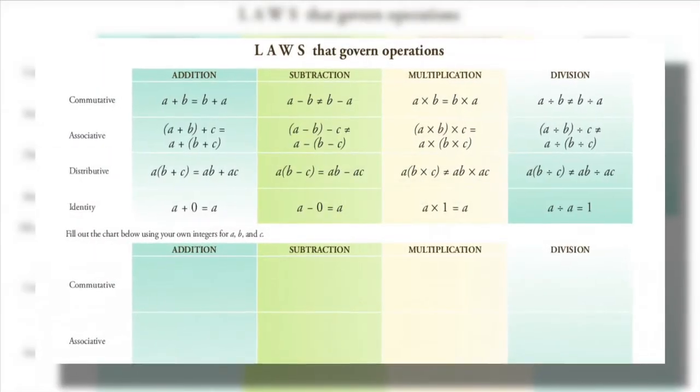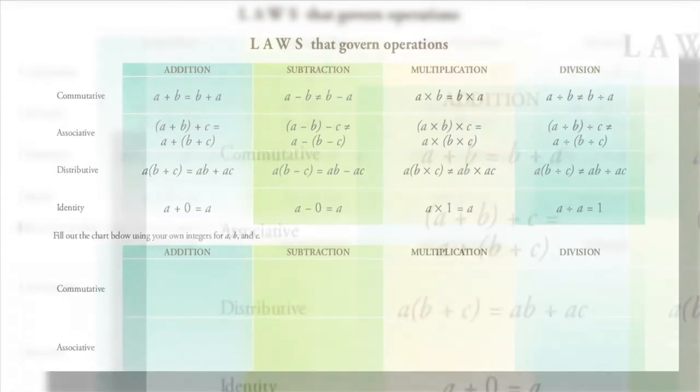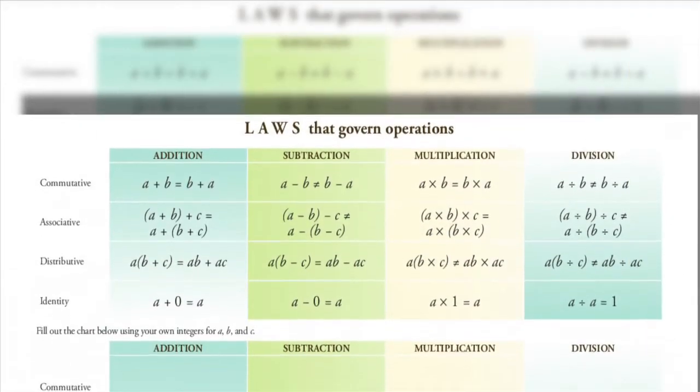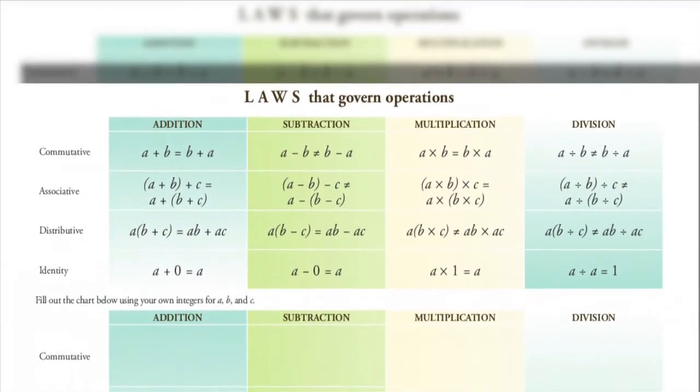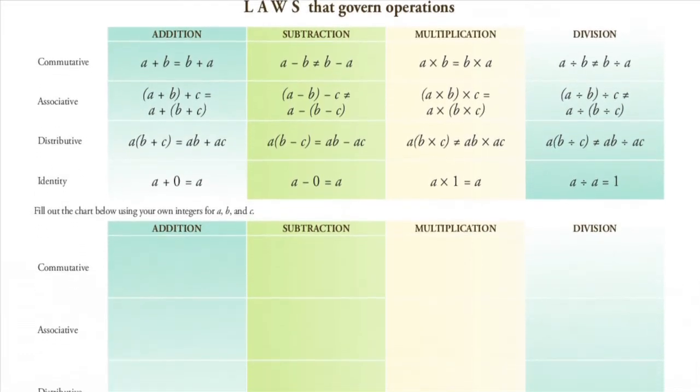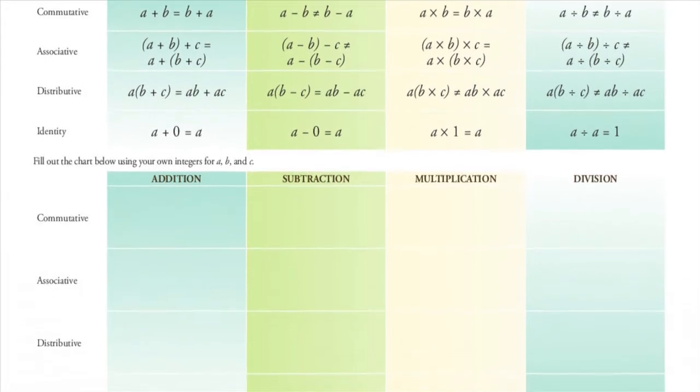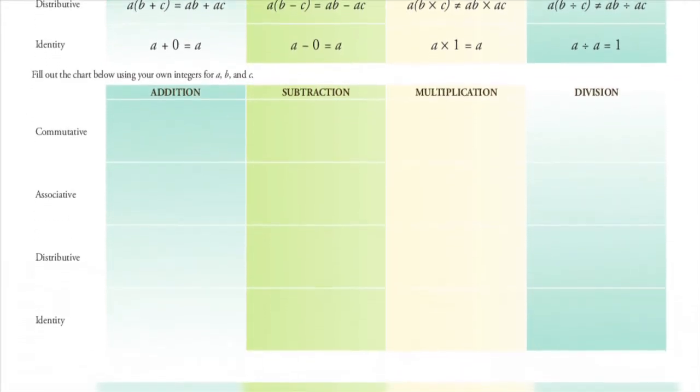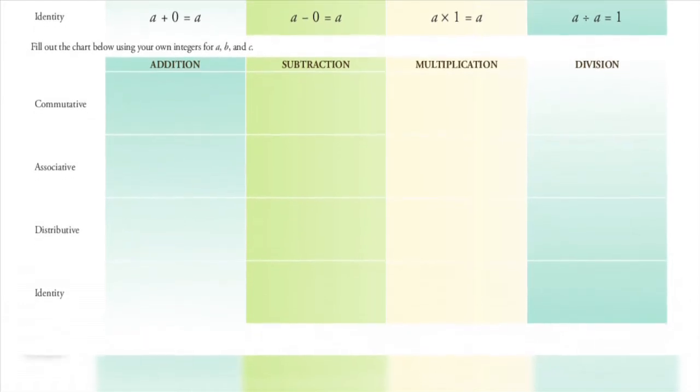On the next panel, we have the four laws that govern operations: commutative, associative, distributive, and identity laws, written with letters in the top half and spaces below for students to insert numbers of their own choice. Let your students play around with this panel, and they will prove to themselves that these laws are true in addition and multiplication, but not true for subtraction and division. This is something we take for granted that students understand, but seldom give them the time to discover it for themselves.